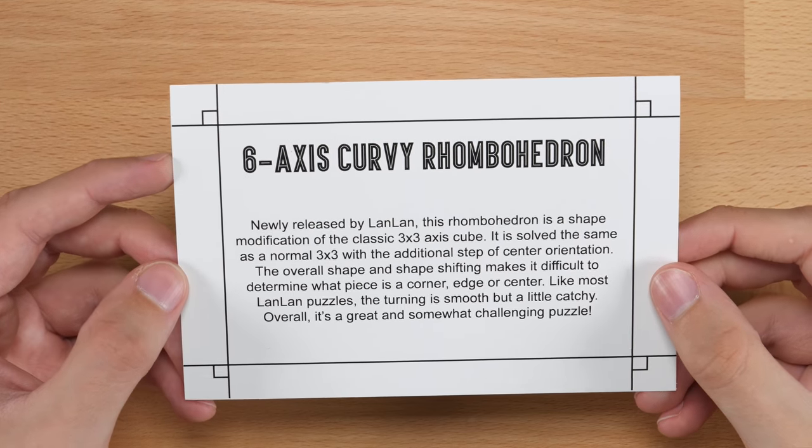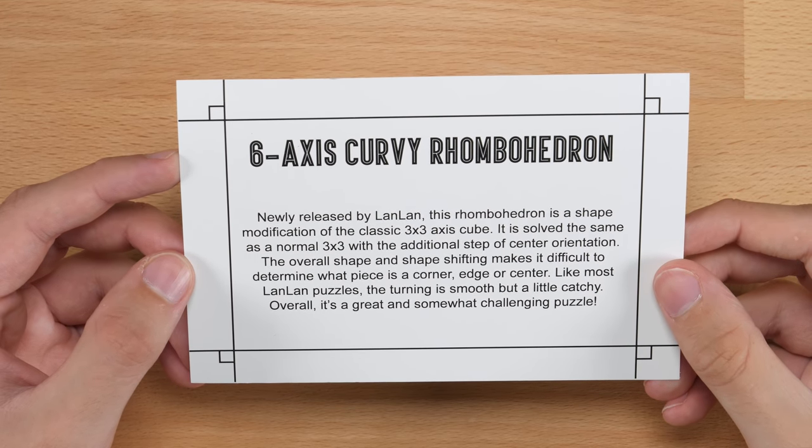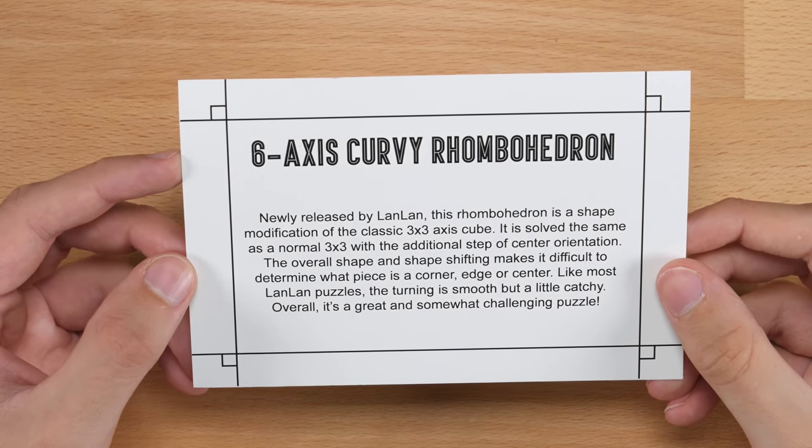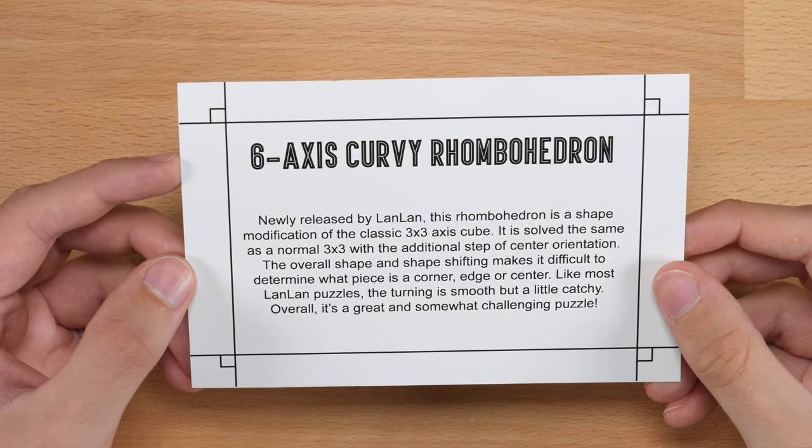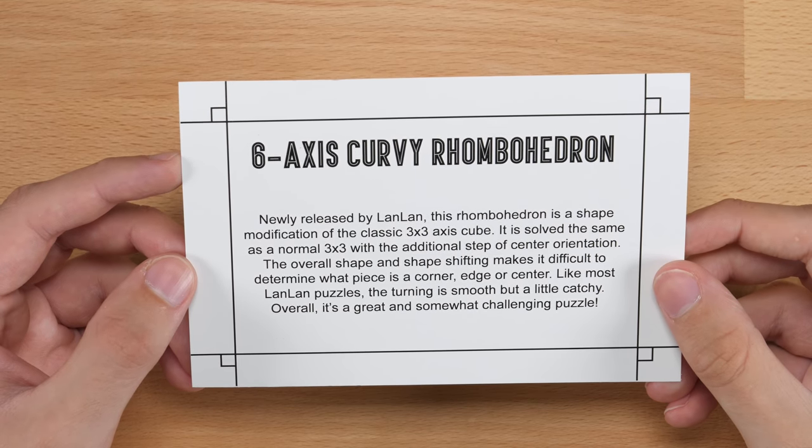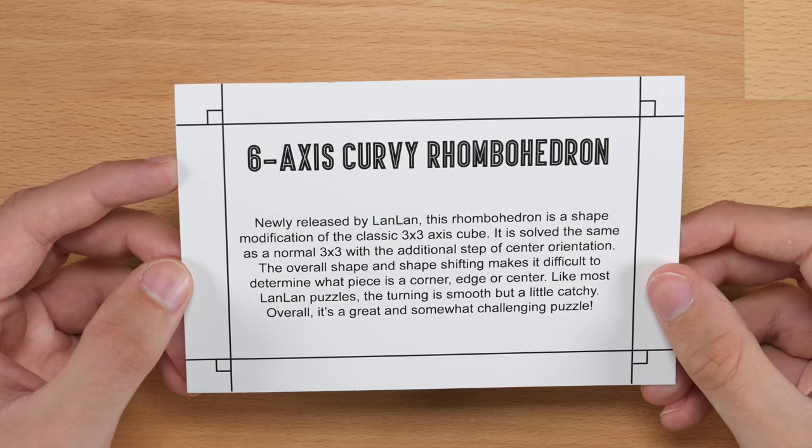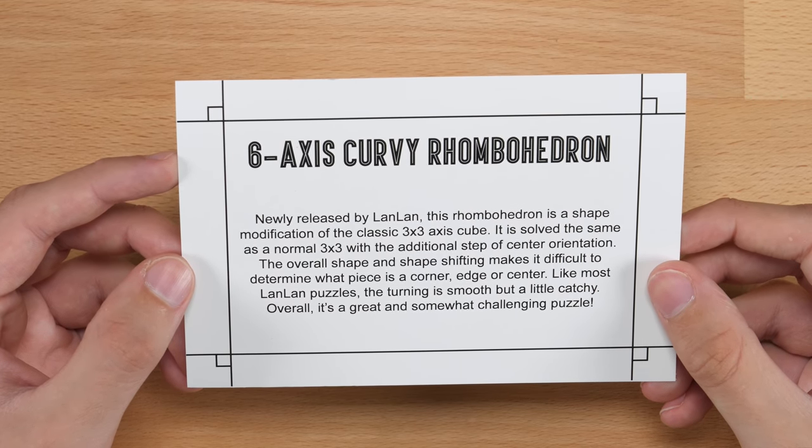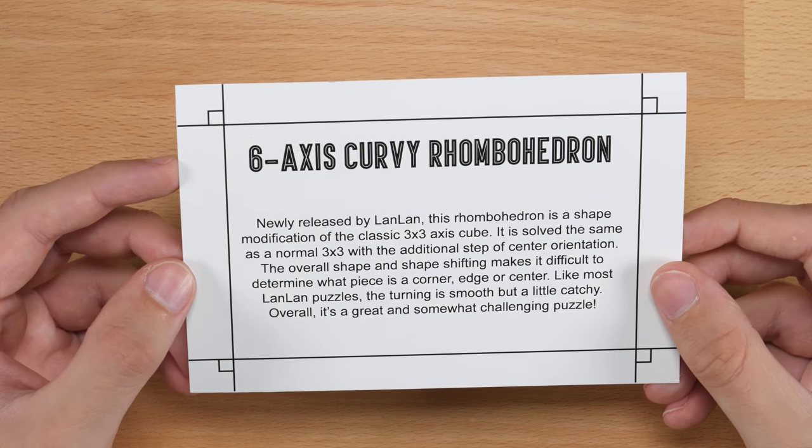Let's go ahead and start with this one. This says, newly released by Lanlan, this rhombohedron is a shape modification of the classic 3x3 axis cube. It is solved the same as a normal 3x3 with the additional step of center orientation. The overall shape and shape shifting makes it difficult to determine which piece is a corner, edge, or center. Like most Lanlan puzzles, the turning is smooth, but a little catchy. Overall, it's a great and somewhat challenging puzzle.